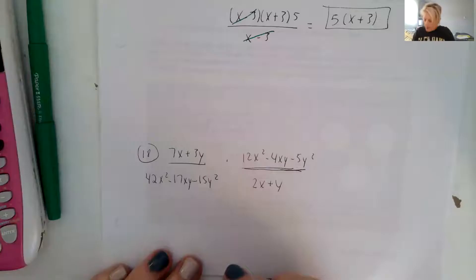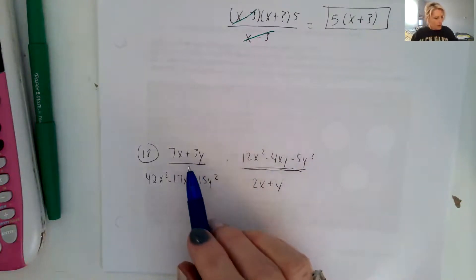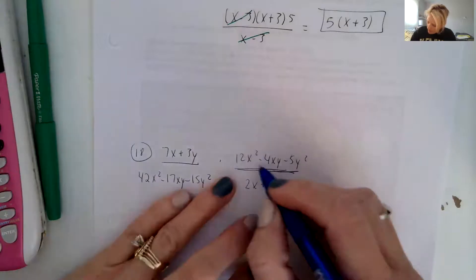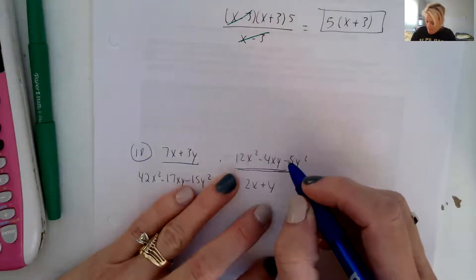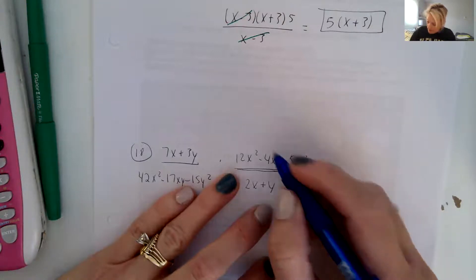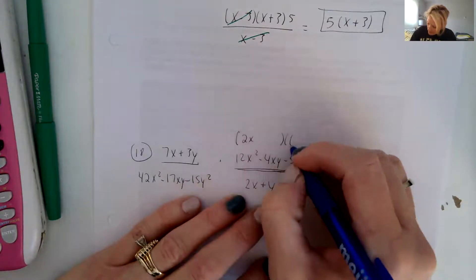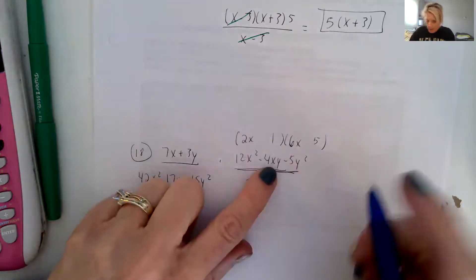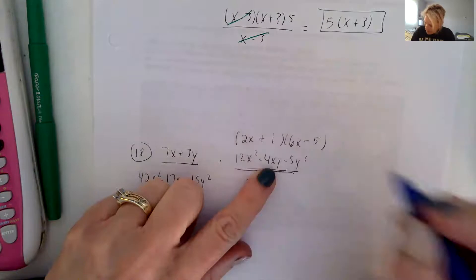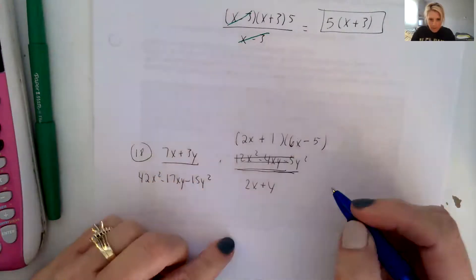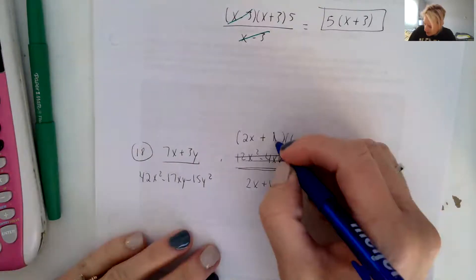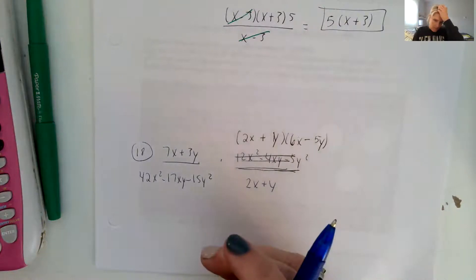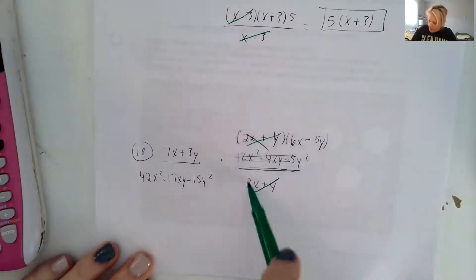Number 18 is a multiplication, so we just need to factor. So 7x plus 3y is factored already, and 2x plus y is factored. We have to factor 12x squared. How about we do 2x and 6x, and do a 5 here and a 1 here. So we have 10 minus 6 is the 4 in the middle. So we're going to make the 10 negative and the 6 positive. And that's 2x plus y and 6x minus 5y. The 2x plus y's cancel right off the bat.